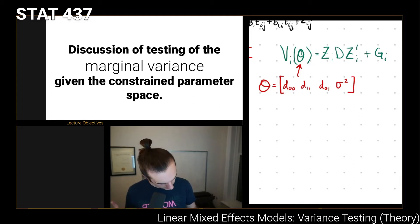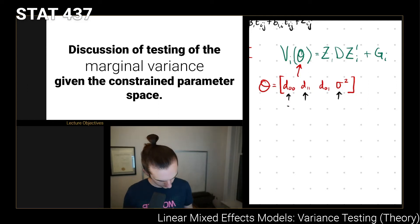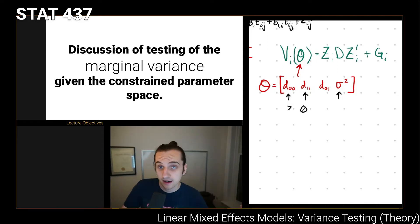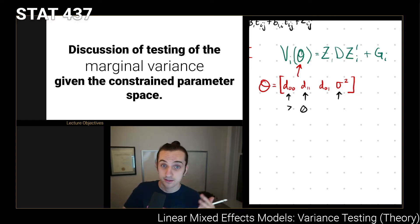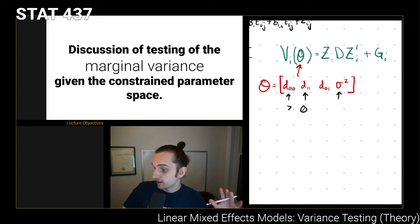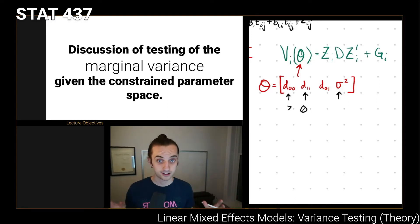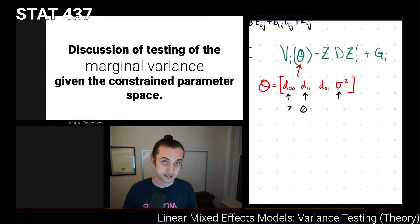A few things to note: d_{00}, d_{11}, and sigma squared all have to be greater than 0, so we're constraining those parameters to be positive because they're variances — we can't have negative variances. When doing maximum likelihood estimation, those variances can't be any real number; they have to be constrained. The likelihood theory that gives us asymptotic results for the likelihood ratio and Wald-based statistics actually relies on having an unconstrained parameter space. In situations with constrained parameter spaces, the asymptotic distributions aren't what we would normally expect.